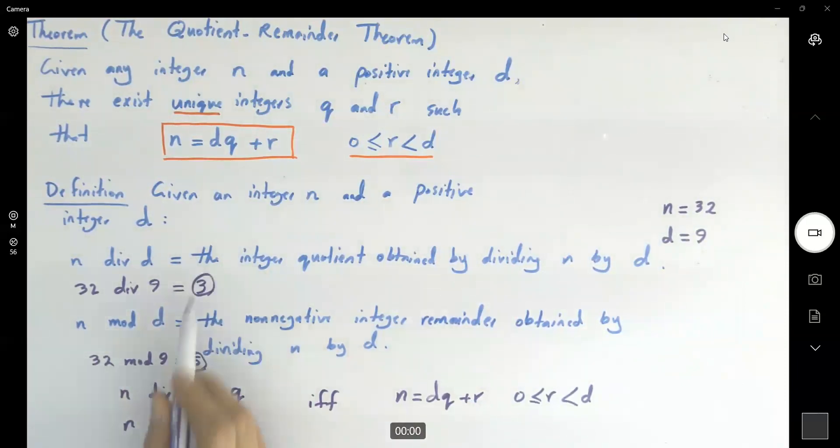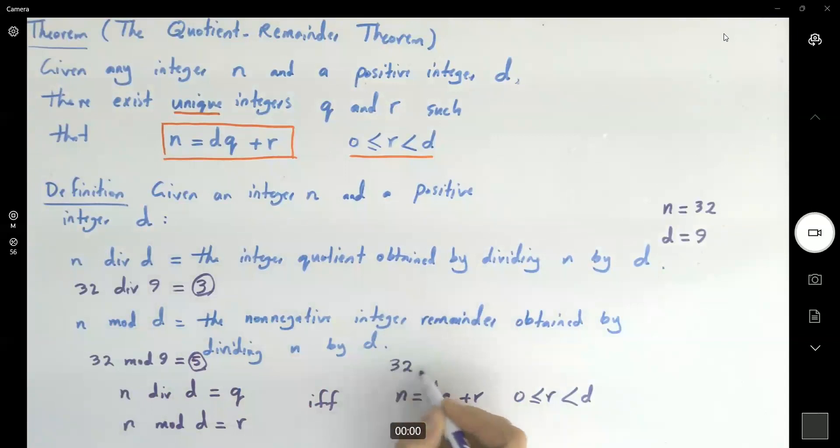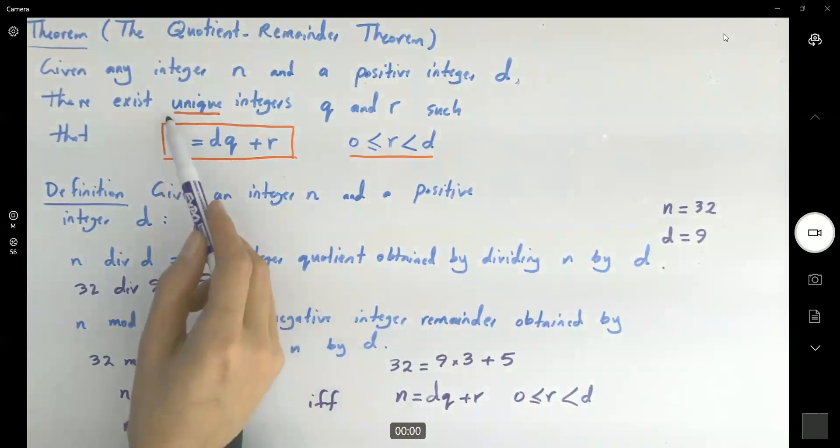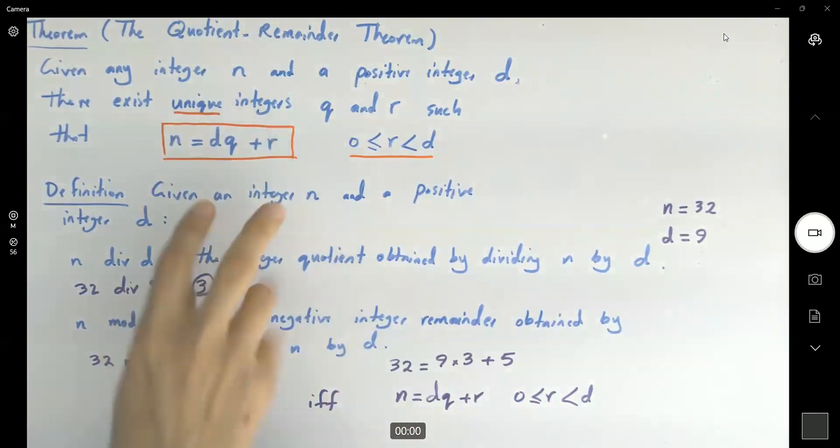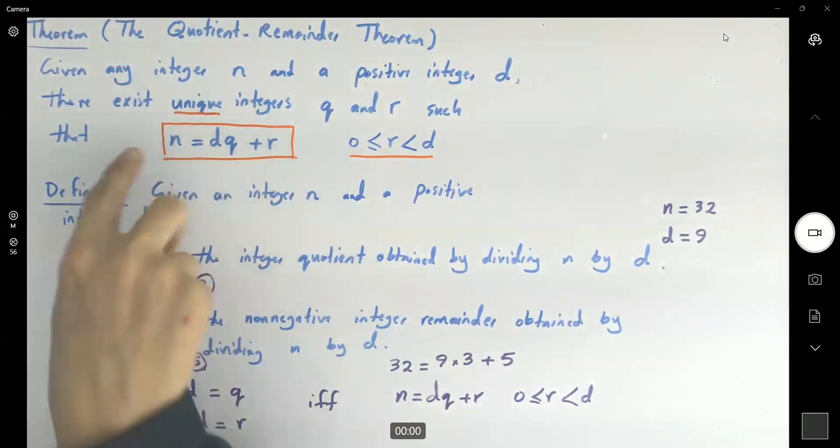So, by using these two information, just simple division, you can write 32 as, well, here you have 9 times 3 plus the remainder, 5. Now, this is coming from the quotient remainder theorem. Just note that you have unique integers satisfying this written format for n.